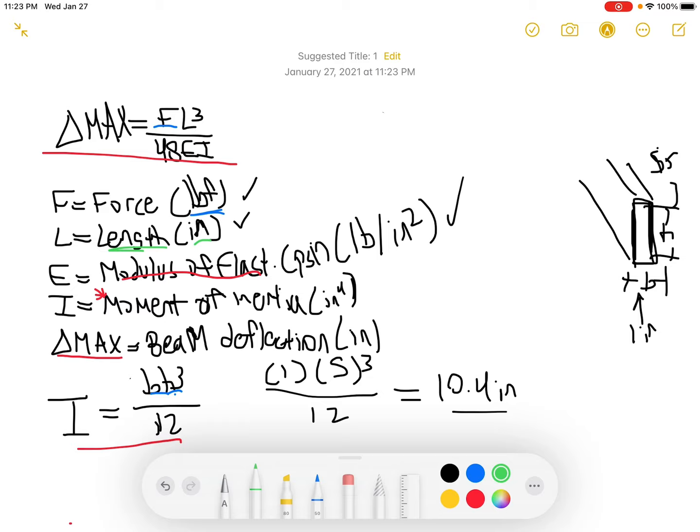Now we can solve for beam deflection, but we also need to have values for these things. Let's say we had a force of 170 pounds, a length of five feet—in that case we would need to convert to inches—60 inches. And then elasticity, let's say that's 419,000 psi. And then moment of inertia we just said 10.4, so now we can plug it in.